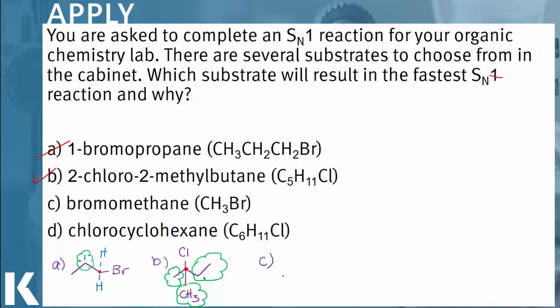Answer choice C is bromomethane: a carbon attached to a bromine atom and surrounded by three hydrogen atoms. Since our only carbon is attached to the leaving group, that carbon is our carbocation, supported only by tiny electron density clouds from the hydrogens. Bromomethane is a terrible substrate for an SN1 reaction.